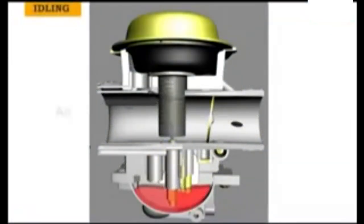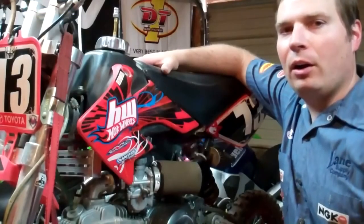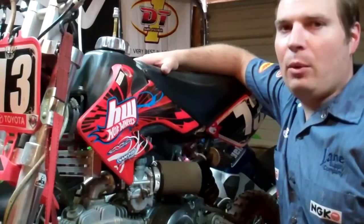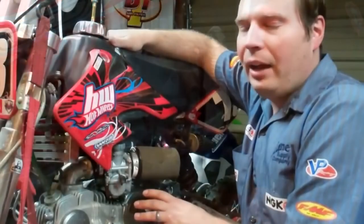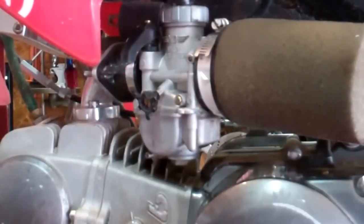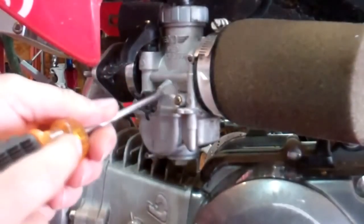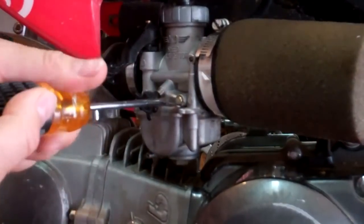If you've done all that and still have idle problems, it can be as simple as adjusting the mixture screw. Identifying the type of screw is important — either you have a fuel screw or an air screw, each controlling one side of the mixture.